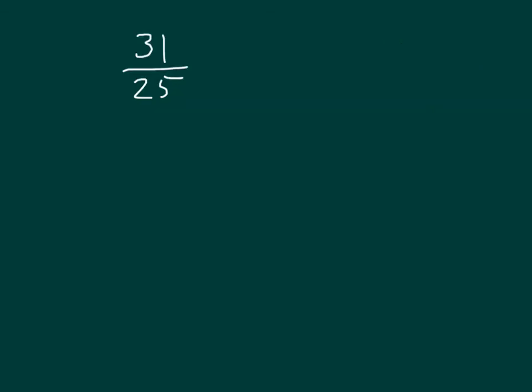We would like to make the decimal equivalent for this one as well. We have 31 twenty-fifths. Hey, wait a second here. 31 twenty-fifths is actually larger than 1. It is an improper fraction. Our procedure is still the same, in that we're still looking for either tenths, hundredths, or thousandths. So what can we multiply by? Concentrate on the denominator here. Twenty-five times what?